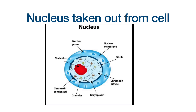Now we have taken out the nucleus from the cell. Inside the nucleus you can see the nucleolus and tangled hair-like structures called chromatin. Please focus on this chromatin. At the time of cell division, these chromatin become arranged in a classical form — let's see what that classical form is called.